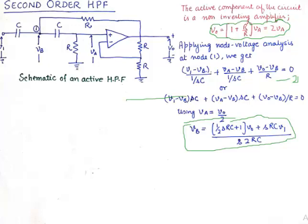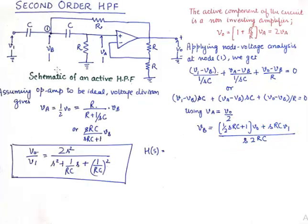If you go to the next step, which will be finding VA in terms of these passive components, the arrangement of these passive components, this will be R upon R plus 1 upon SC into VB. Voltage division rule is applied here to get VA which of course is equal to 1 upon 2 V0 again derived from this equation.